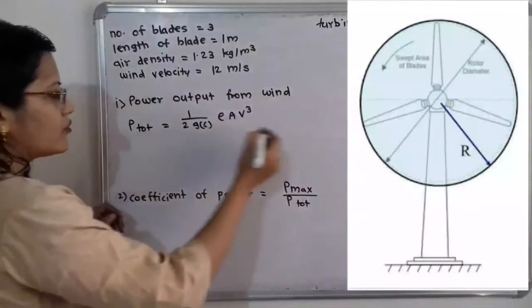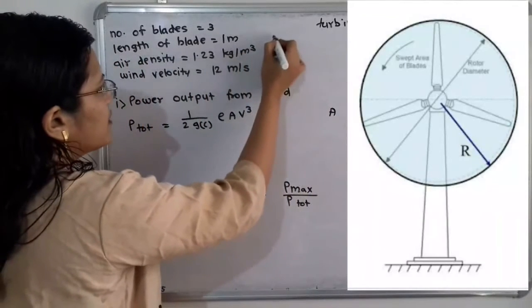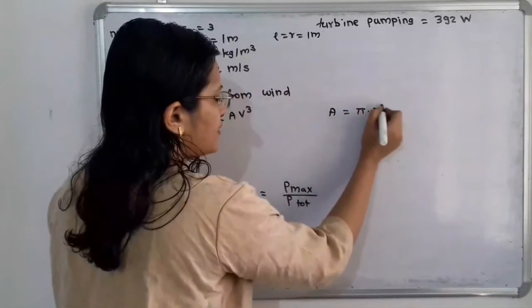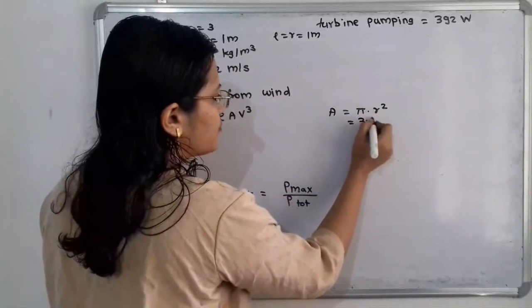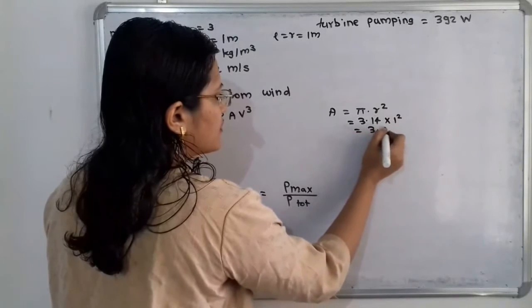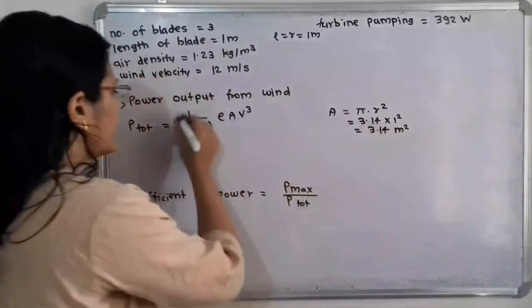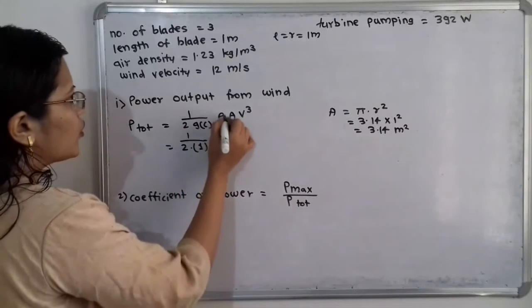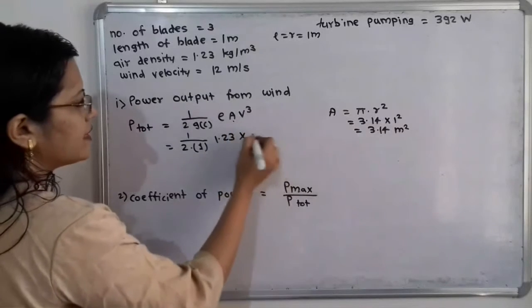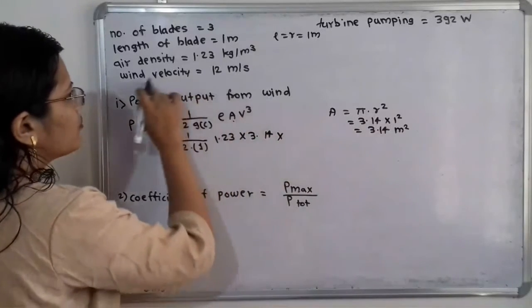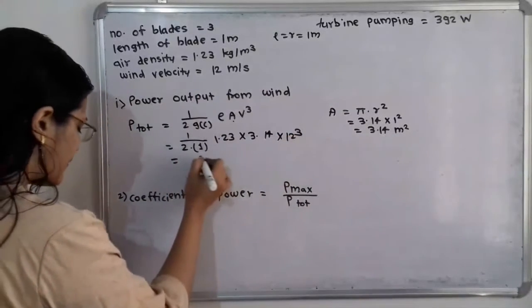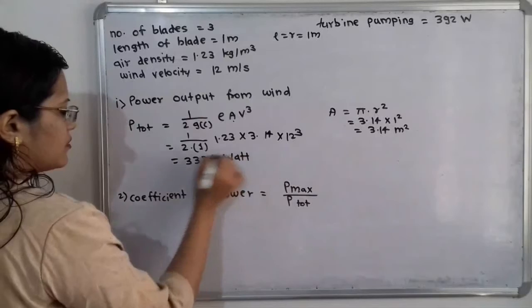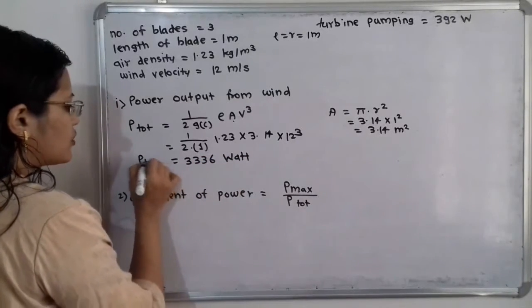The area A equals pi into R square, so pi into 1 square equals 3.14 meter square. The total power is P total equals 1 by 2 times Gc times rho times A times V cube. Putting in values: half times 1 times 1.23 times 3.14 times 12 cube gives the answer 3336 watts. This is the P total, or the total power in the wind.